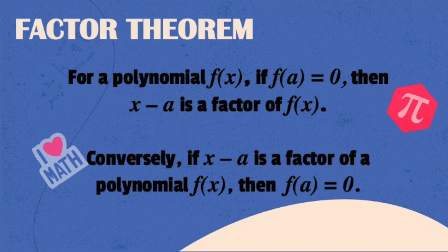Let's have the second part of the discussion, and that is the factor theorem. The factor theorem states that for a polynomial f of x, if f of a is equal to 0, then you can say that x minus a is a factor of f of x. The process of using the factor theorem is somehow the same as the remainder theorem since they are both using the substitution property.